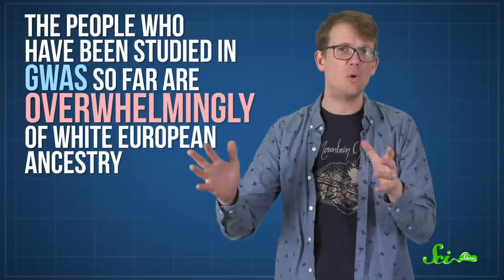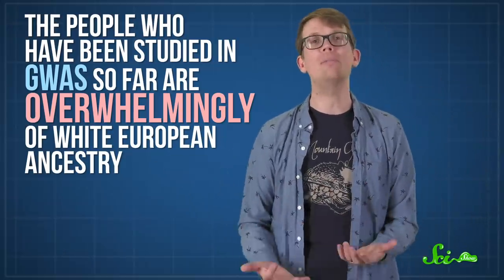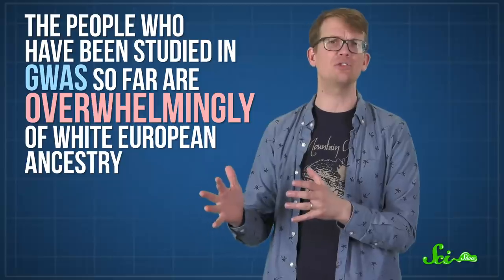There is a huge caveat to how useful these polygenic risk scores are, though. You see, people who have been studied in GWAS so far are overwhelmingly of white European ancestry. And that means when polygenic risk scores are calculated using existing data, they're most informative for white folks.